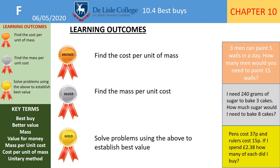Let's review our learning. We might have used the bronze method: finding the cost per unit of mass, volume, or length. The silver method: finding the length, mass, or volume per unit cost — per pound or per penny. Gold learning: putting it all together to establish best value in lots of situations. There are reminders of the types of examples on the right-hand side — just check you understand everything.